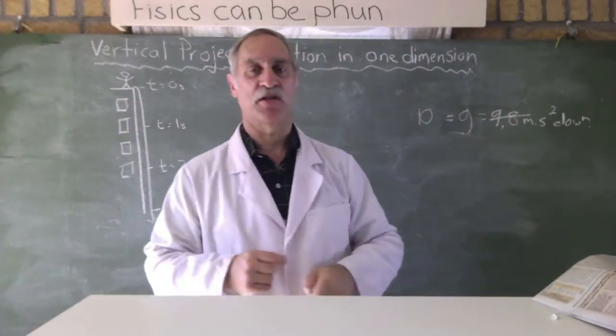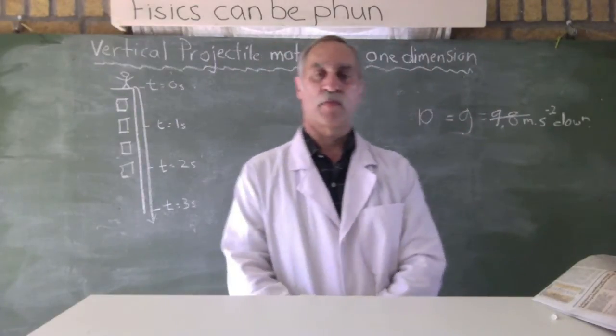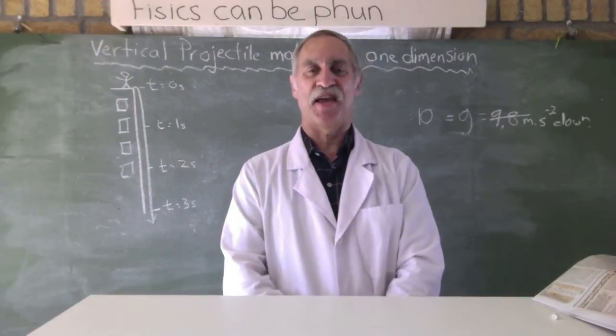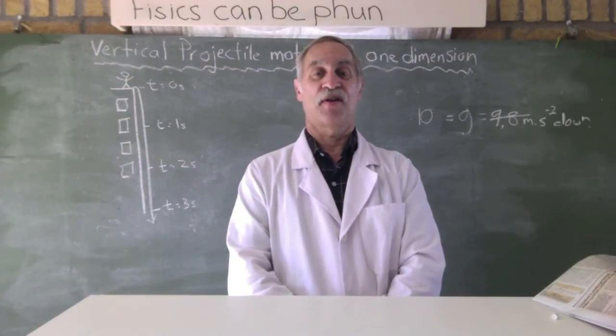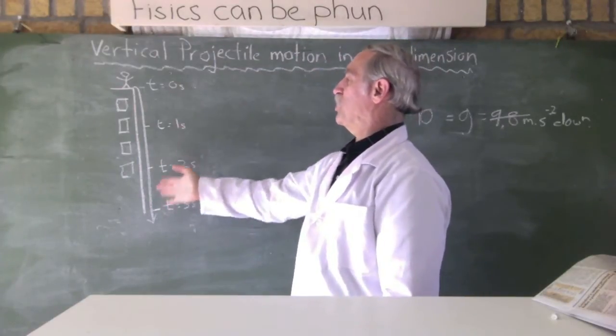Again, meters per second to the minus two. Right? 10. And let's just see how much you can figure out all by yourself, as far as dropping stones over building is concerned.